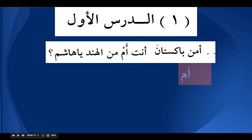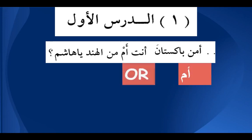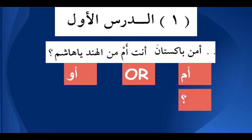There is another word meaning 'or' which is aw. The difference is: am is used in questions — if you want to ask 'Are you from India or Pakistan?' that is a question, so we use am. If you are making a statement — 'Give me this or that' — then you use aw. So am always comes in questions.